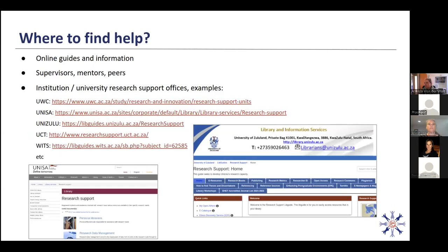So, where to find help? There are places where you can go to find help with each step of your research workflow. If you go online, there are many guides and information available. It's also really important to speak to people — speak to your supervisors, mentors, or peers, whether you're a researcher or a student. Just gather information in this phase while you prepare to get an idea of how things are done.